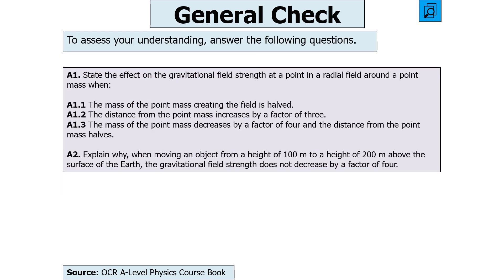The next question says: state the effect on the gravitational field strength at a point in a radial field around a point mass when firstly the mass is halved; the distance increases by a factor of 3; and then the mass decreases by a factor of 4 and the distance halves. Then explain why moving an object from 100 m to 200 m above Earth's surface does not decrease field strength by a factor of 4. Pause the video now.